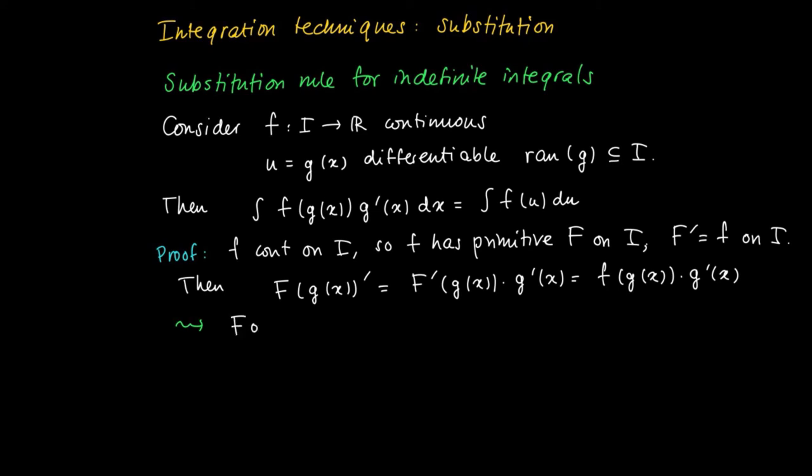But then this shows that F composed with g is a primitive of the function f of g of x times g prime of x on I. So F composed with g is the derivative of the integral that we've seen above. So if this is a primitive,